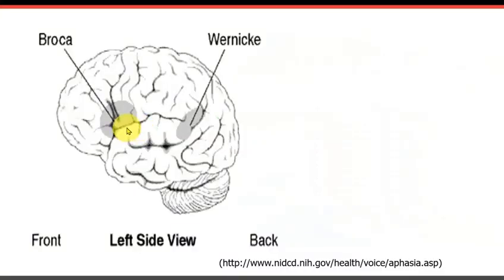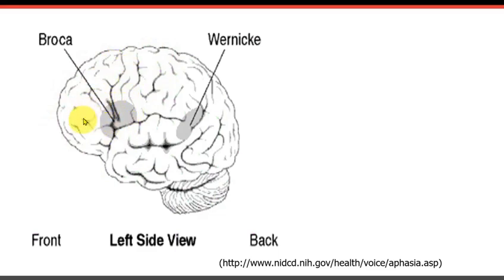Broca's area is located in the frontal lobe — on the front side of the brain. If you have some damage in this area, it will damage your ability to produce motor movements of speech, meaning you won't be able to speak.